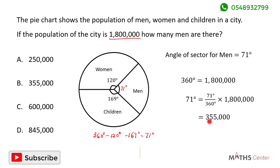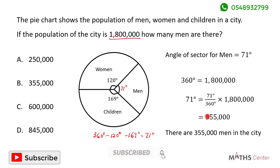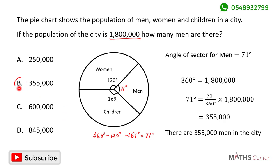This gives us 355 thousand. So in the city there are 355 thousand men. Looking through the options, the correct answer is option B: 355 thousand.